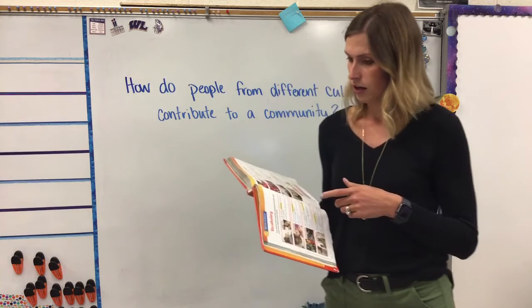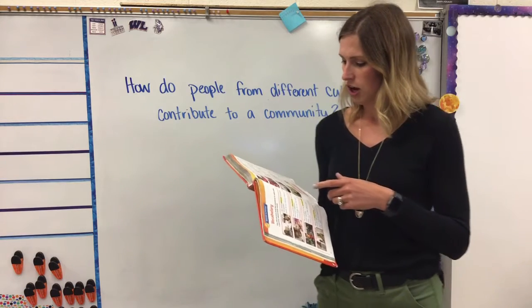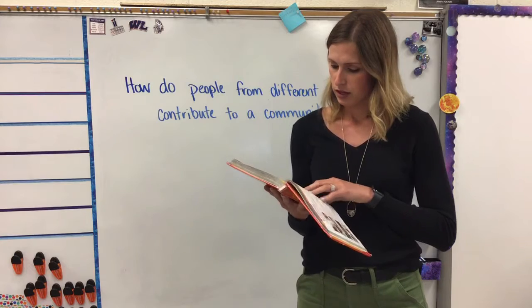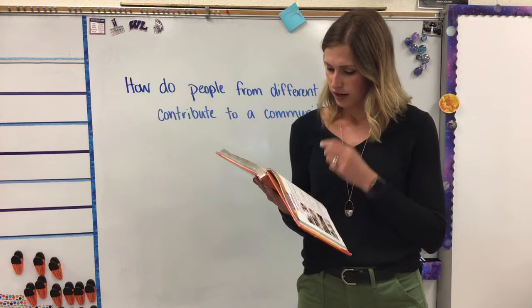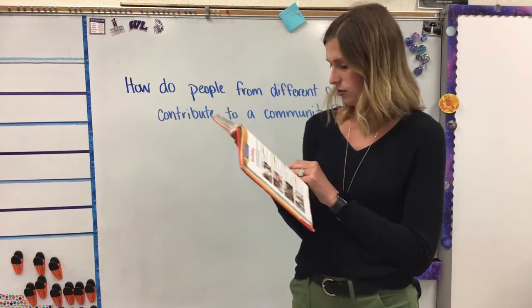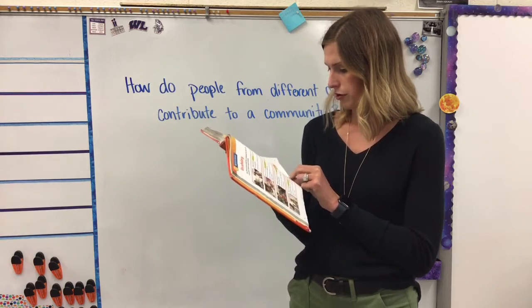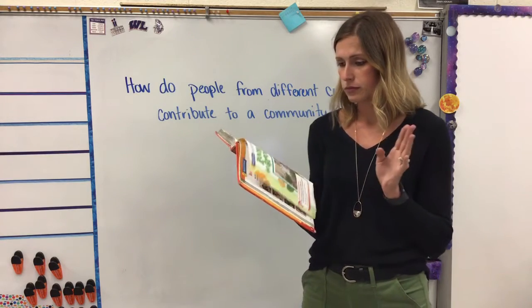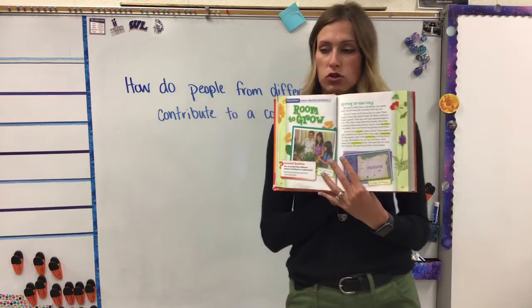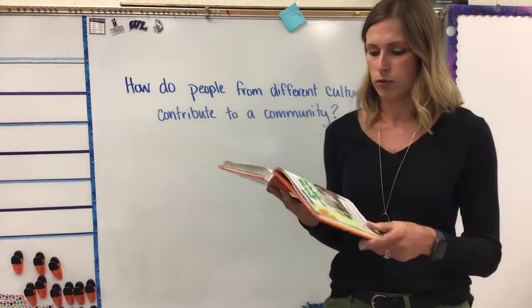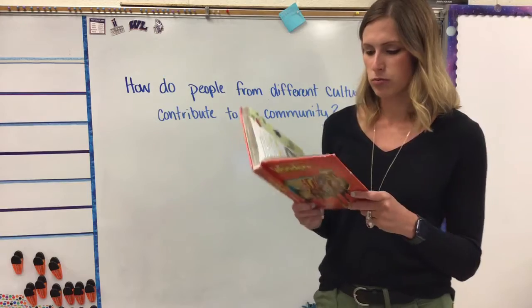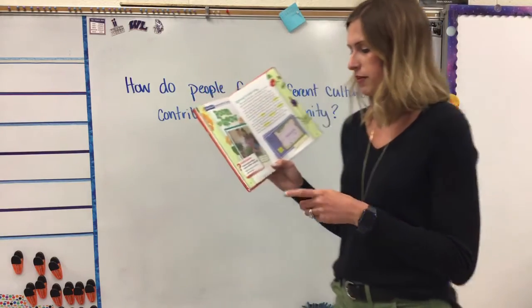Next word: scared. 'Our dog hides during storms because he is scared.' Last word: tumbled. 'The ripe tomatoes tumbled out of the big basket onto the ground.' We're going to see those new words in our 'Room to Grow' story, and then we'll do a vocab worksheet as well later on.